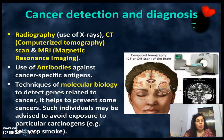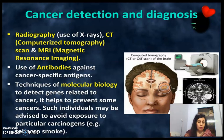Antibodies against cancer-specific antigens can be used for detection. Techniques of molecular biology can detect genes related to cancer at quite early stages, allowing individuals who are susceptible to cancer to be identified and advised accordingly.